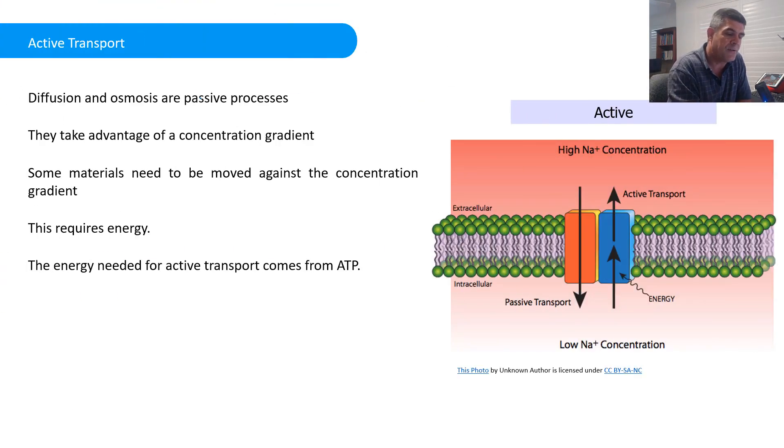As I mentioned, the problem with diffusion and osmosis is they're passive processes. They take advantage of a concentration gradient. We know that with concentration gradients, we have an area where a substance is in high concentration and another area where the same substance is in a lower concentration. And we have a passive movement of particles from an area of high to an area of low concentration.